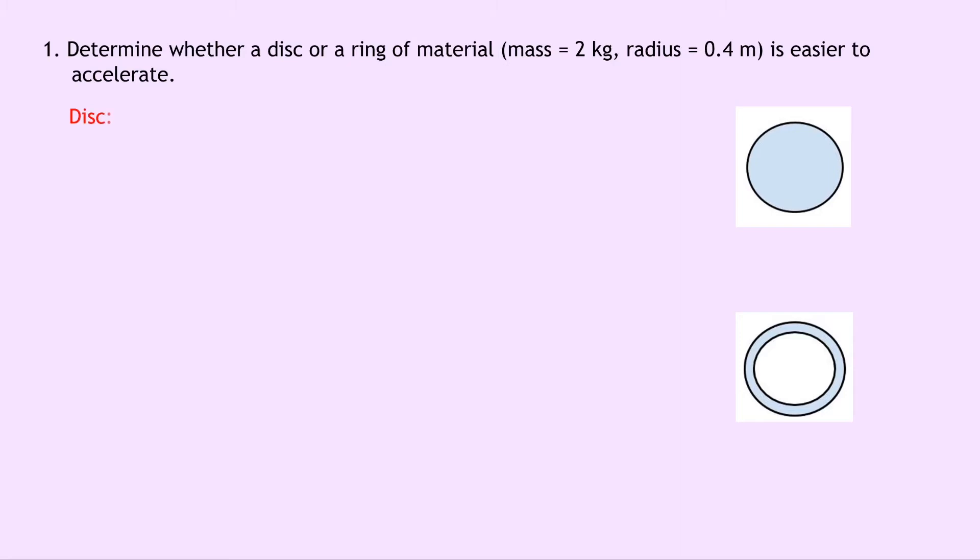So looking at the disc first of all, we can write down what we know from the question. So the moment of inertia of the disc is what we're trying to find. We know the mass is 2 kilograms. The distance from the axis of rotation is 0.4 meters and so we can write down our equation for the moment of inertia of a disc.